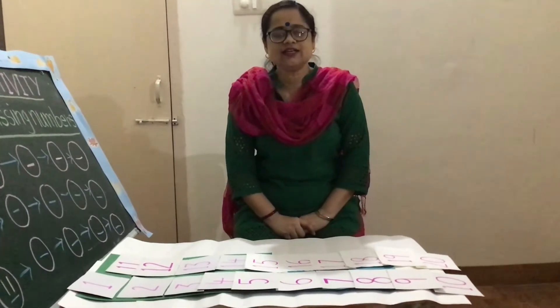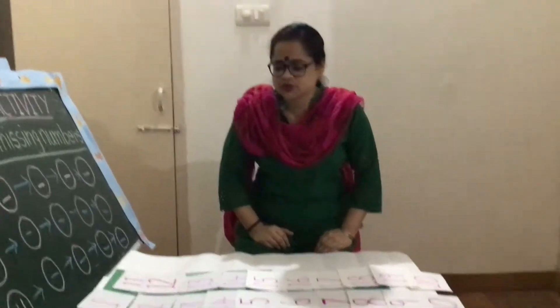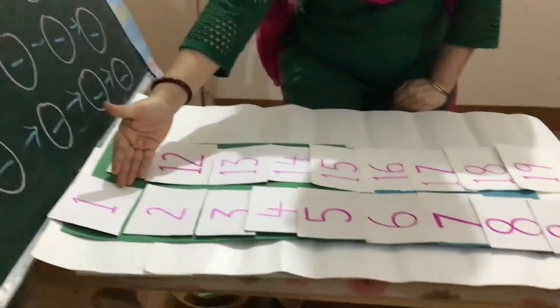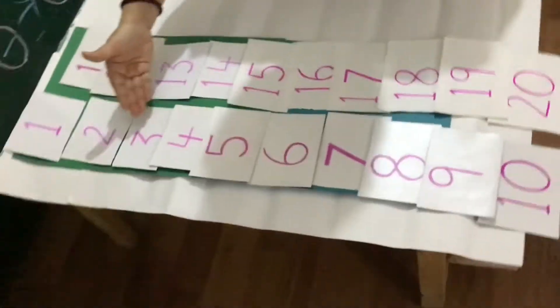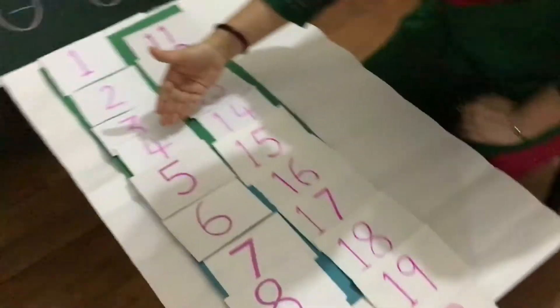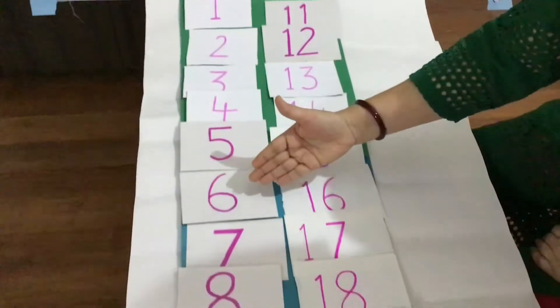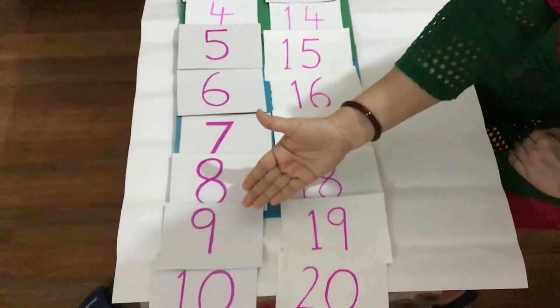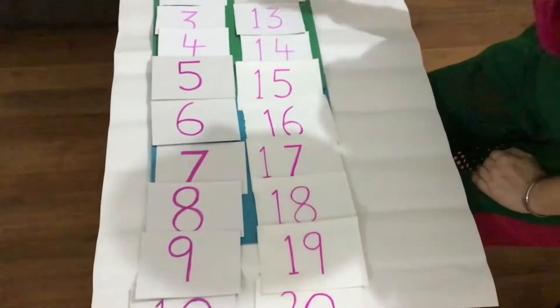Okay children, let's start counting number 1 to 20. 1, 2, 3, 4, 5, 6, 7, 8, 9, 1-0, 10.